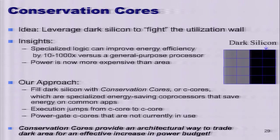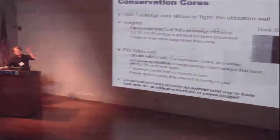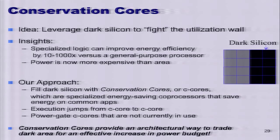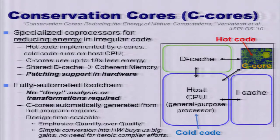GreenDroid uses things we call conservation cores — automatically generated specialized circuits where we take hotspots in the source code (regions where you spend a lot of time) and convert them into Verilog, building a multicore processor with these conservation cores injected into it. We light up just the conservation cores we need when we need them. The execution model is that code jumps from conservation core to conservation core, running the specialized hardware targeted for each loop. We're trading this relatively cheap resource — area, a lot of which is dark anyway — for energy efficiency.